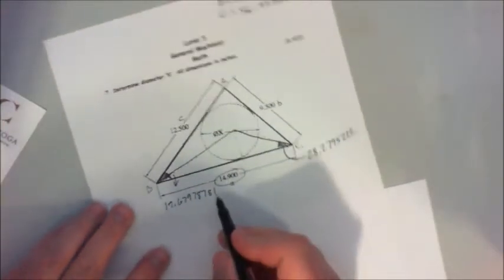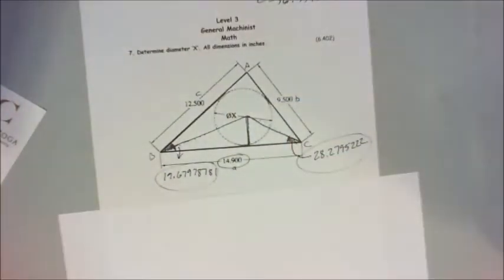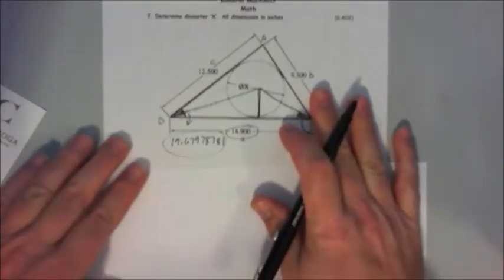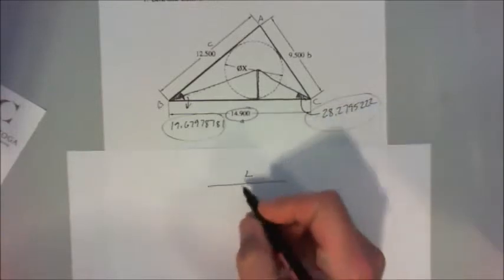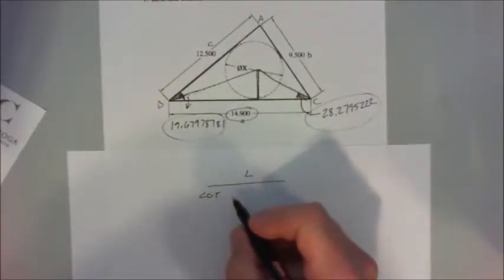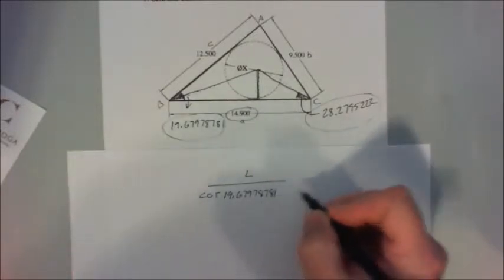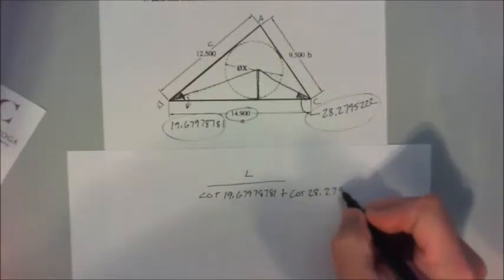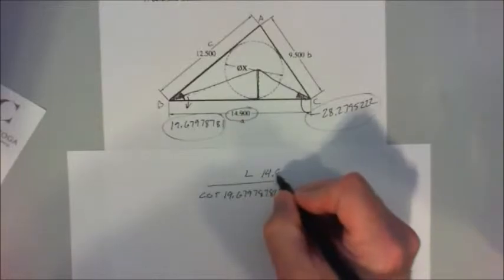Now we have our triangle here to here. We have our base, and we have our angle, and our angle, and what we want to find here is our height. Once we have our height, we multiply that by two, and how do we do that, we use the law of cotangent. So our length here, L equals 14.9 divided by cotangent 19.67978781 plus cotangent 28.2795222.